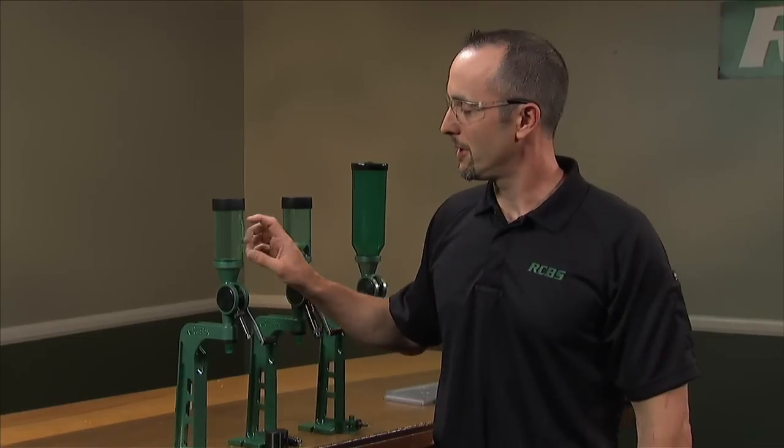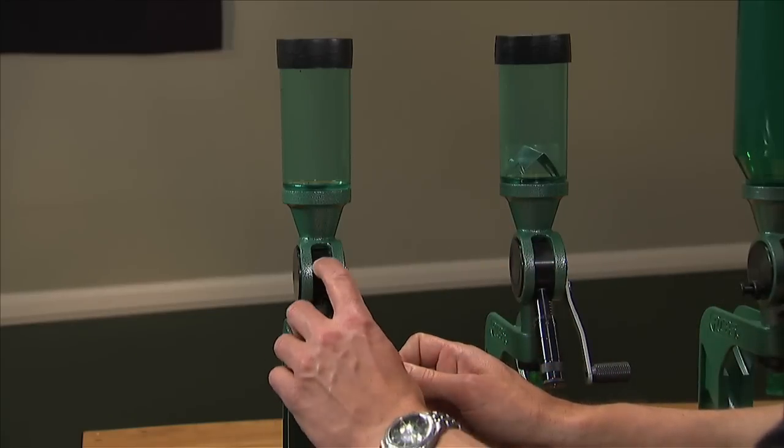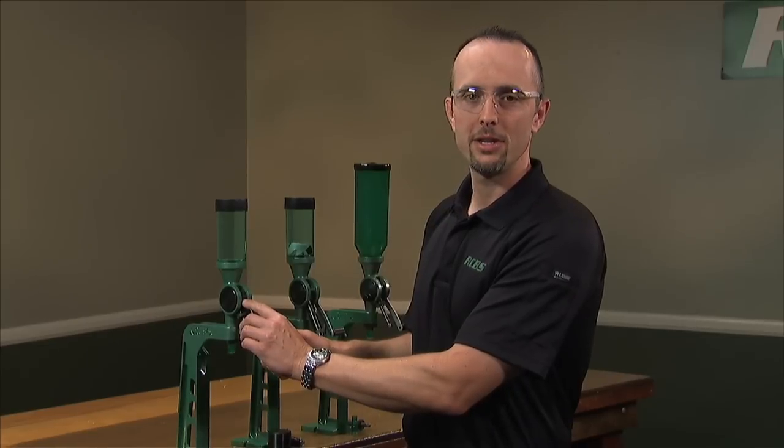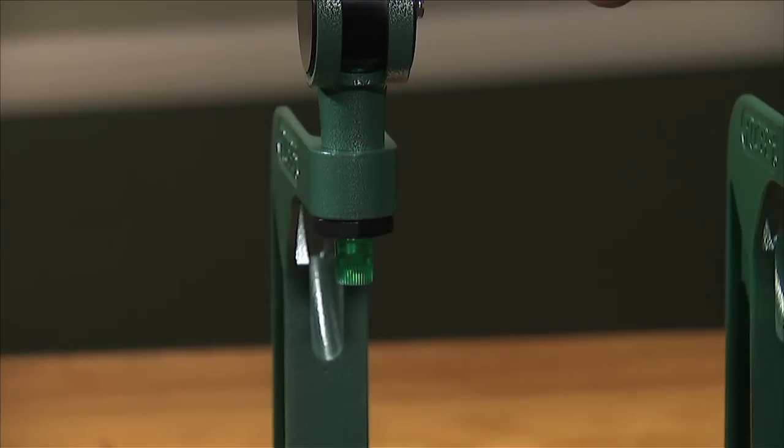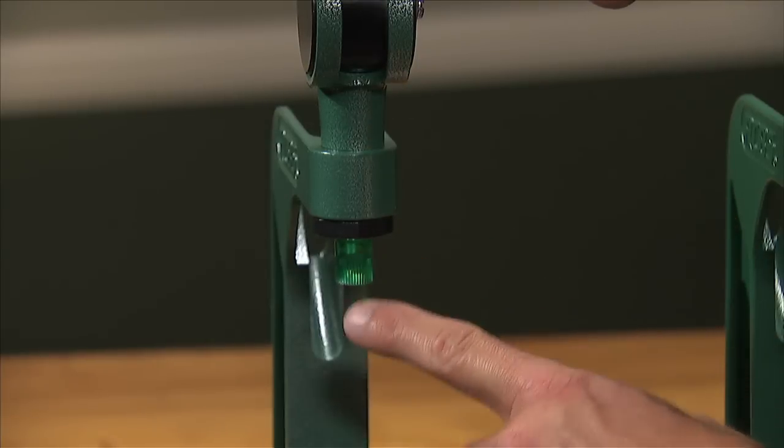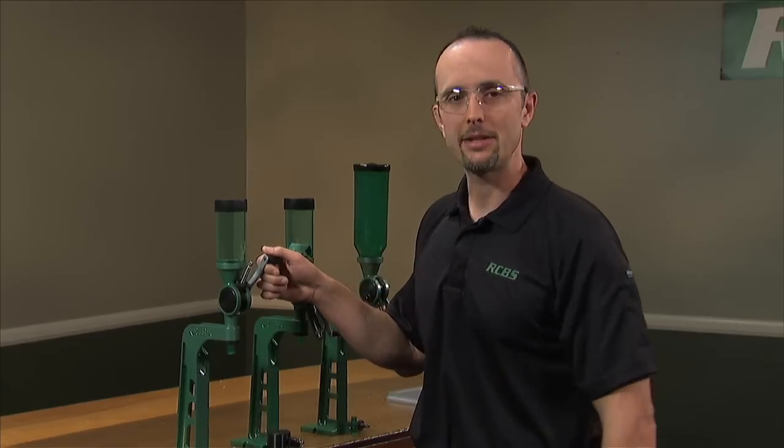Its function is very simple. You fill the hopper with powder, adjust the depth of the metering screw assembly inside of the cylinder to change your volume, raise the handle, and gravity drops the powder down into the drop tube with your case underneath. It's that simple.